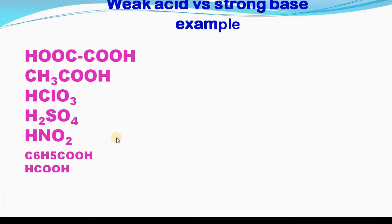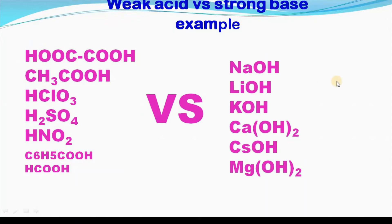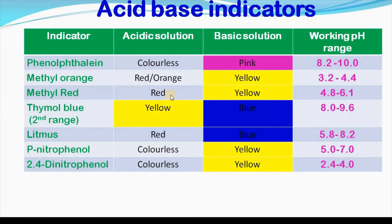Here is an example of weak acid versus strong base. From the indicator list, we see that phenolphthalein's working pH range is 8.2 to 10, while the working range of thymol blue is 8 to 9.6.